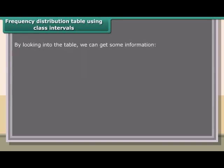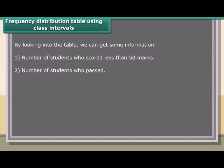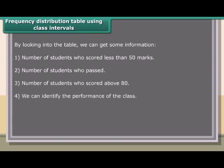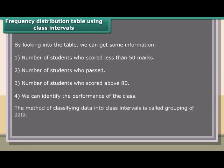By looking at the table, we can get information such as: the number of students who scored less than 50 marks, the number of students who passed, the number of students who scored above 80, and we can identify the overall performance of the class. The method of classifying data into class intervals is called grouping of data.